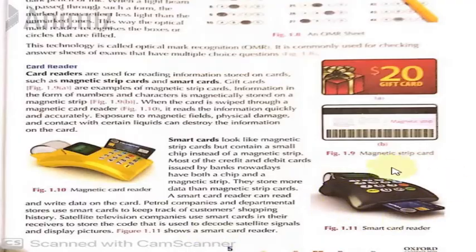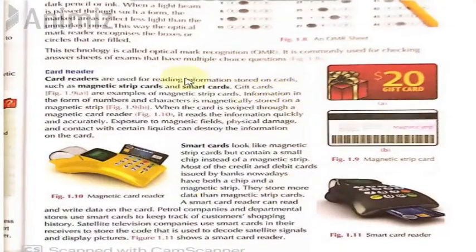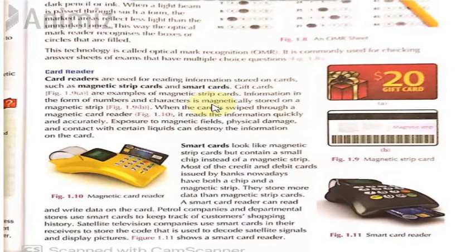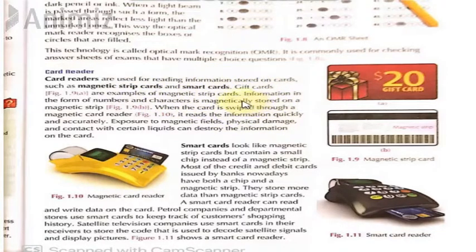As you can see in this picture, these are also input devices used by various organizations. For example, with a card reader, when a person earns something they get a card, and the person is asked to swipe the card to get their gift or whatever they want. The information stored on the card as magnetic strips or in smart cards goes through the device, the computer reads the information, and confirms the correct card so they get their gifts.